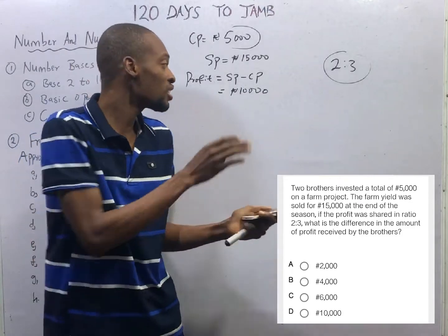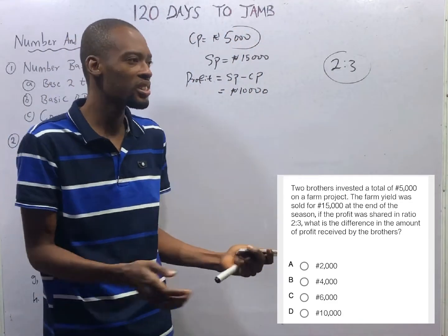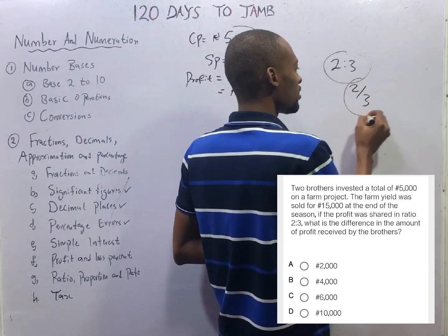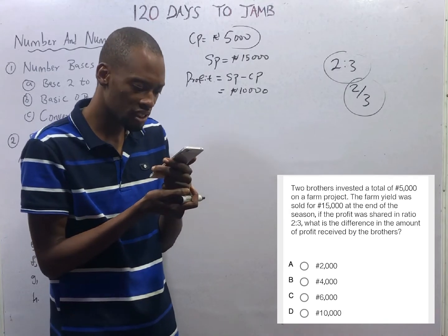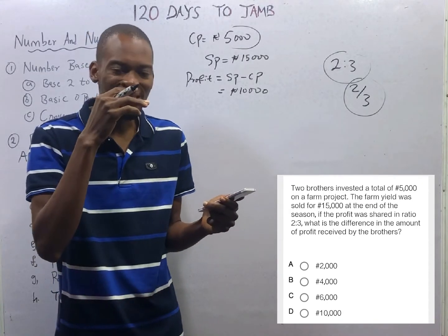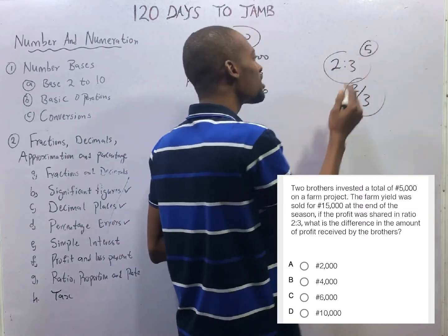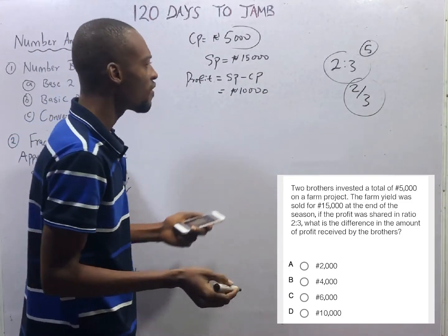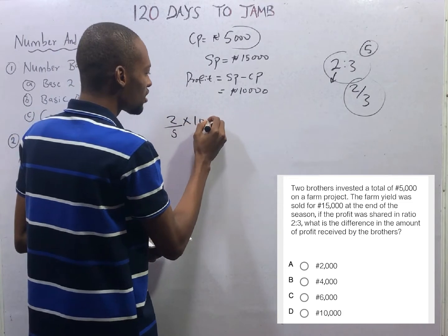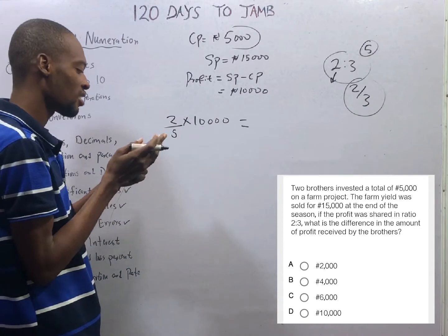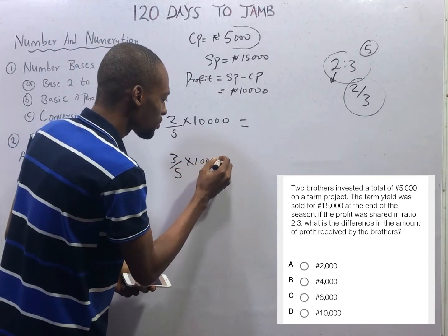They made good profit. They shared it in the ratio 2:3. Ratio is simply division or comparing two things; 2:3 can also be written as 2 over 3. When you see a ratio question, the first thing to do is find the total ratio: 2 plus 3 equals 5. The person taking ratio 2 gets 2 over 5 times 10,000 naira. The person taking ratio 3 gets 3 over 5 times 10,000 naira.